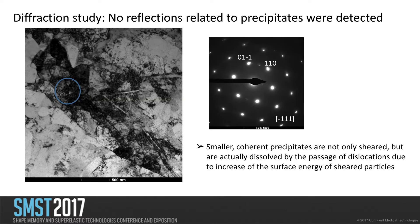The selected area diffraction pattern on this grain shows the 111 zone axis of B2, but compared to the diffraction pattern before deformation — which had super reflections indicating precipitates — now there is no indication of precipitates: the precipitates are gone. What really happens is that during deformation, dislocations nucleate and interact with the precipitates. As they interact, an antiphase boundary forms inside the precipitate and the energy increases. If the critical radius of the precipitate is lower than the stress required to maintain stability, the precipitate starts to dissolve. This is the shearing and dissolution mechanism we observe here.